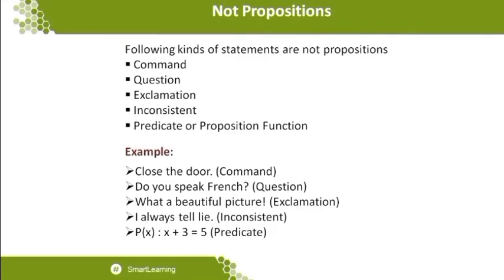Exclamation: 'What a beautiful picture!' — what is that picture? We cannot conclude whether the statement is right or wrong. 'I always tell lies' — who is 'I'? It is inconsistent because we cannot mention who that is, whether male or female, what age. When not able to make a proper decision or declarative statement with logical connectives, we cannot come to a conclusion in propositional logic.